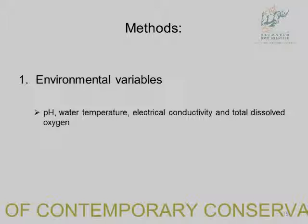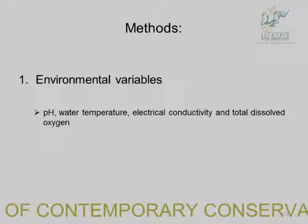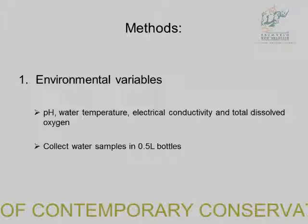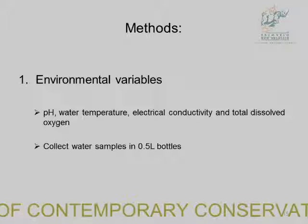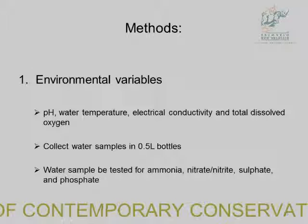For environmental variables, I recorded pH, water temperature, and electrical conductivity, and total dissolved oxygen. I collected water samples in half-litre bottles, submerged them in a cooler box, and transported them to UMGENI laboratories for analysis. The water was tested for ammonia, nitrates, sulfate, and phosphate, because I was looking at agricultural activities.